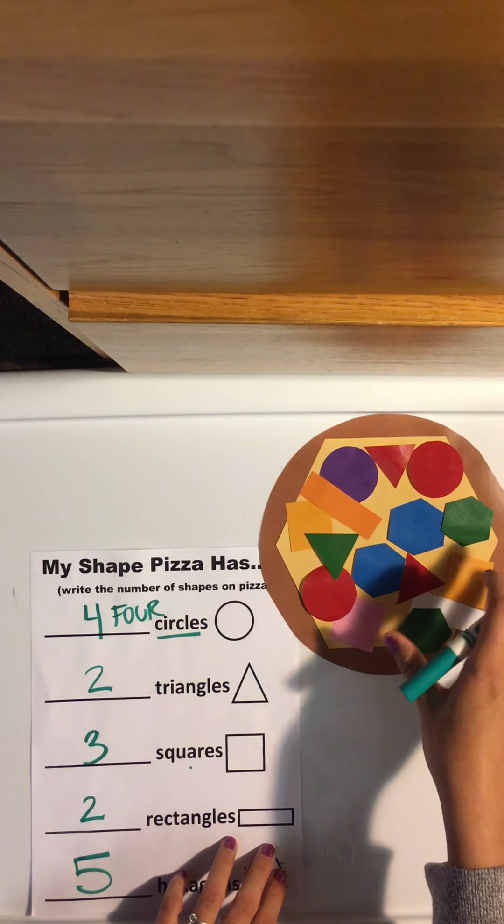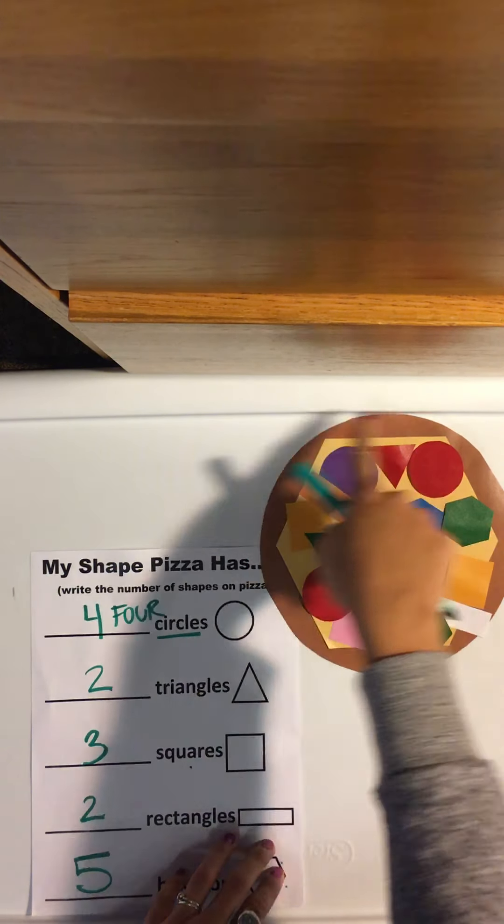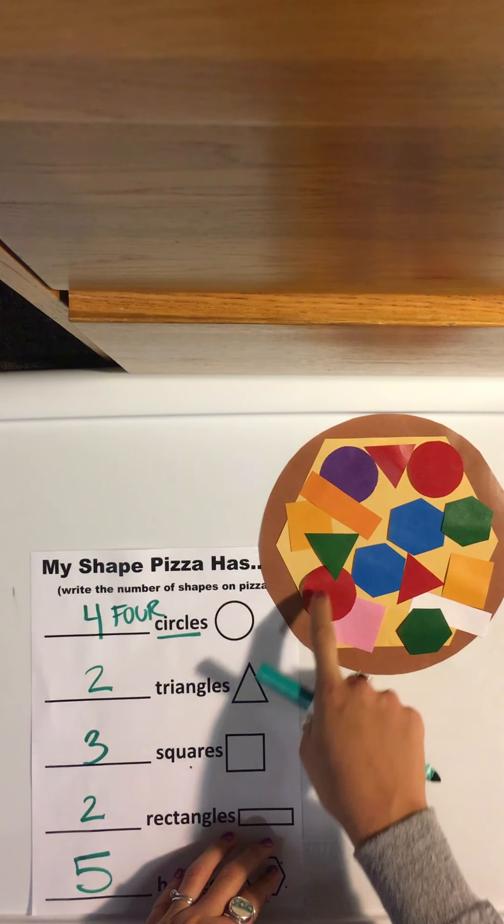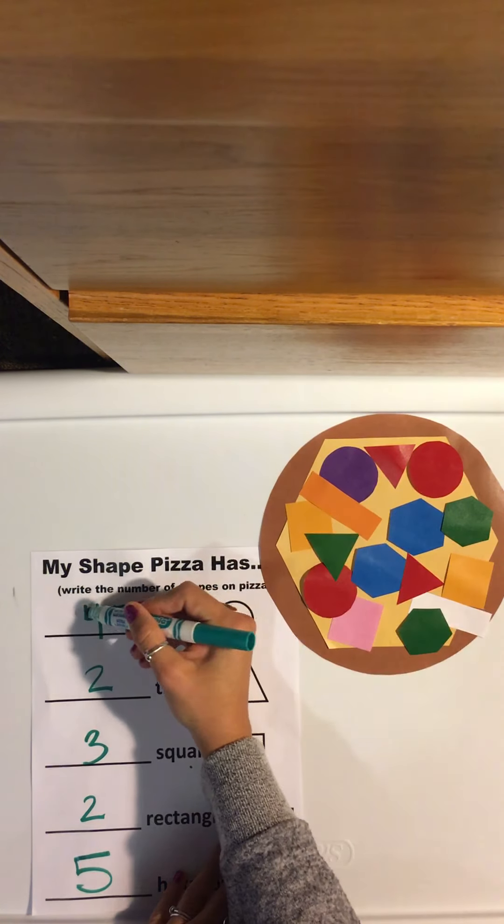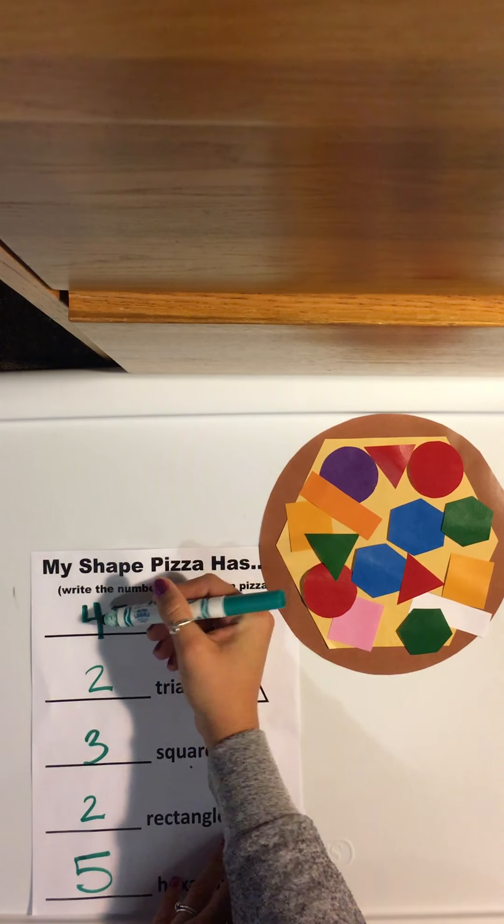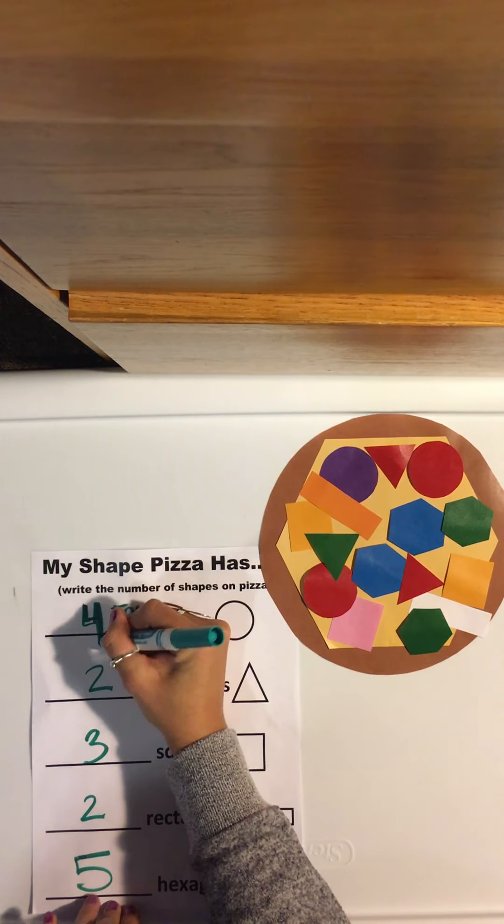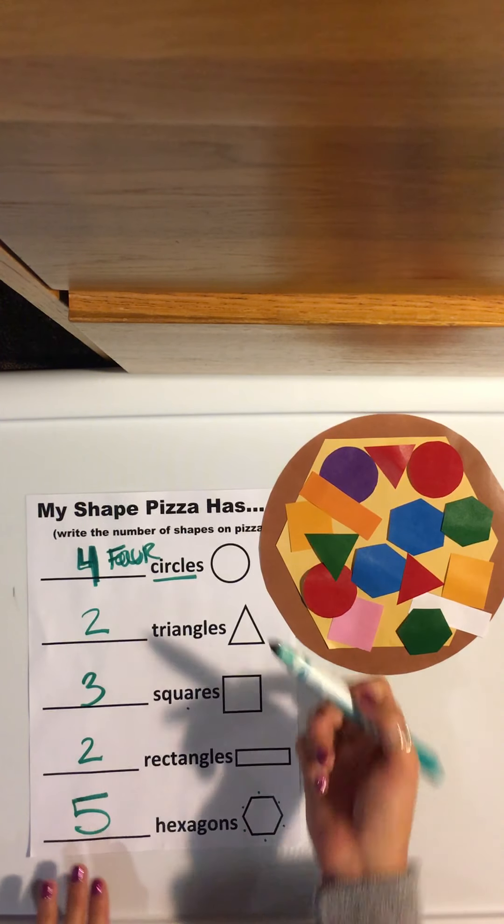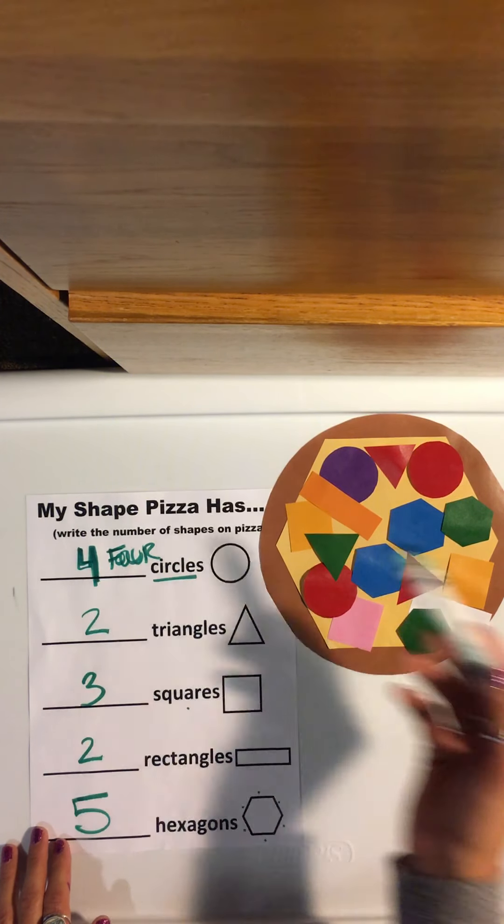So on our pizza, we have how many circles? We have our big dough. You've got to make sure you count the dough. One, two, three, four. So I'd write four right here, which I already did, and you could write it as a number, or you can write it as the word four, whichever way, as long as you're keeping track, and you'd go through it and do that for all the shapes.